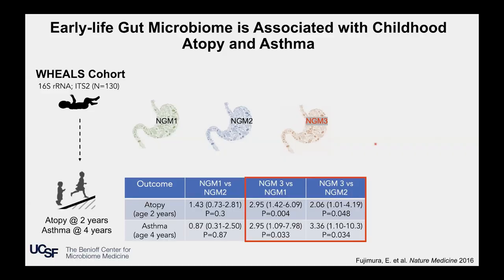Rather than stratifying the babies by their outcomes, we took an agnostic approach and asked an algorithm to tell us whether it could see distinct gut microbial communities in these one-month-old babies. The answer was three — we could see three significantly different gut microbiome configurations. The next question was: did they relate to the atopy and asthma outcomes years later in childhood? And what we found was a resounding yes. This neonatal gut microbiome group NGM-3 had a very distinct microbiome from the NGM-1 or NGM-2 babies, and they were at significantly higher risk of developing atopy at two years of age and asthma at four years of age when compared to either the NGM-1 or NGM-2 babies.